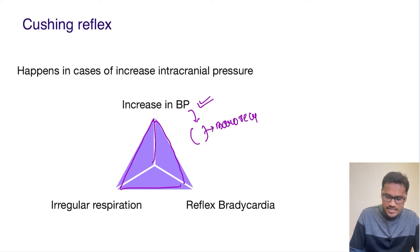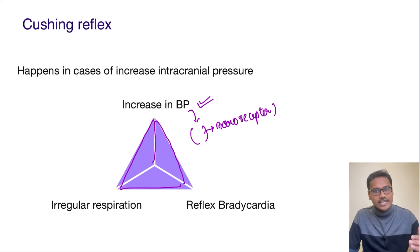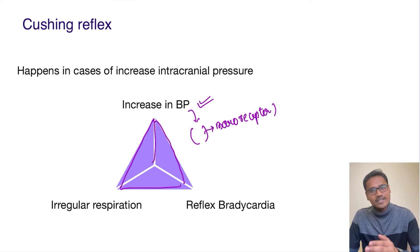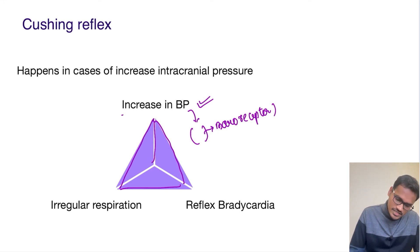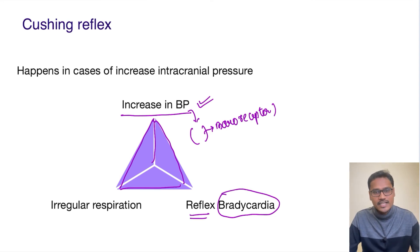Whenever there is a high rise in BP, the baroreceptors will try to centrally inhibit the BP, but right now they cannot do that because the RVLM is directly stimulated by the hypoxia. At the same time, the baroreceptors will reduce the heart rate. So because of this increase in BP there is bradycardia — that's why this bradycardia is called reflex bradycardia.